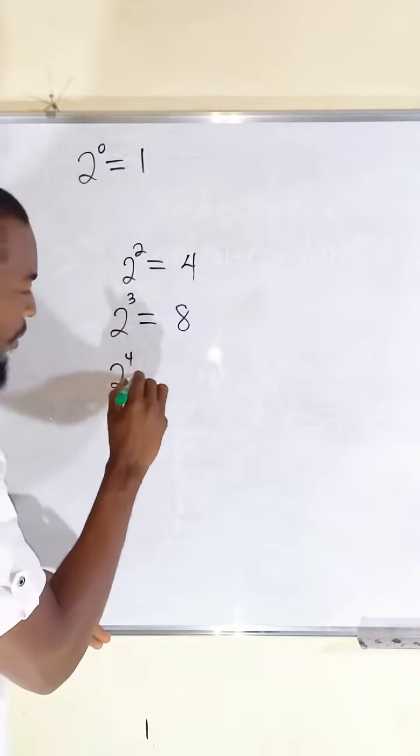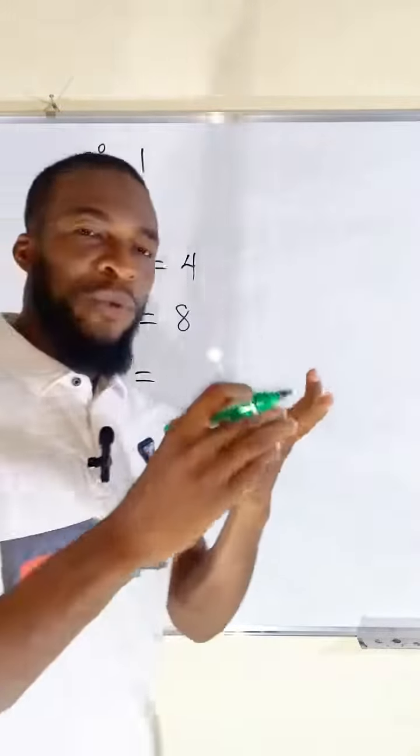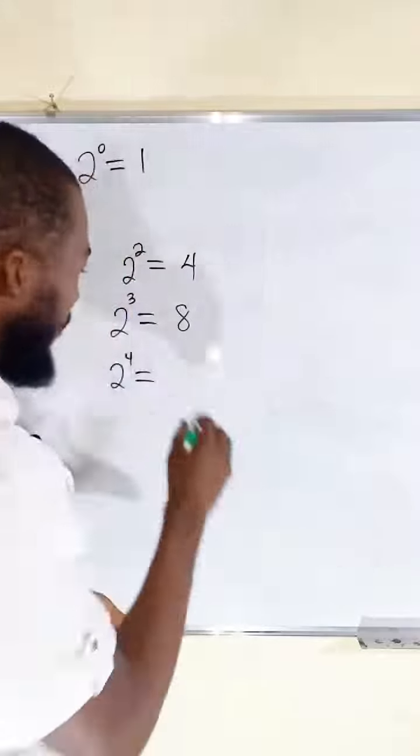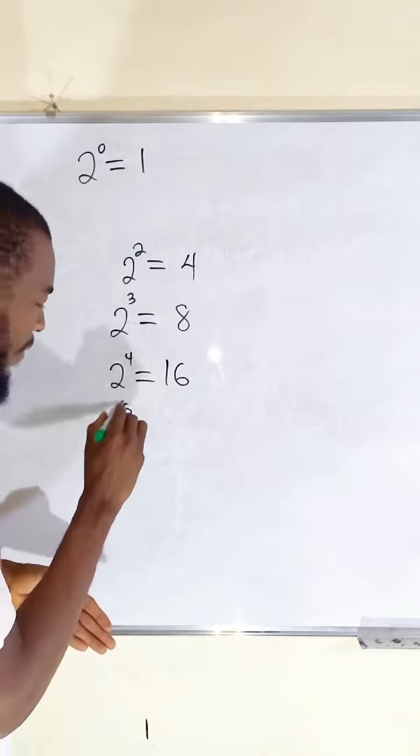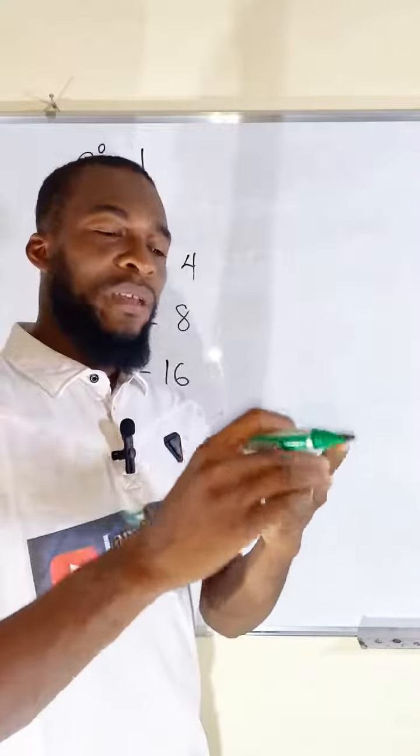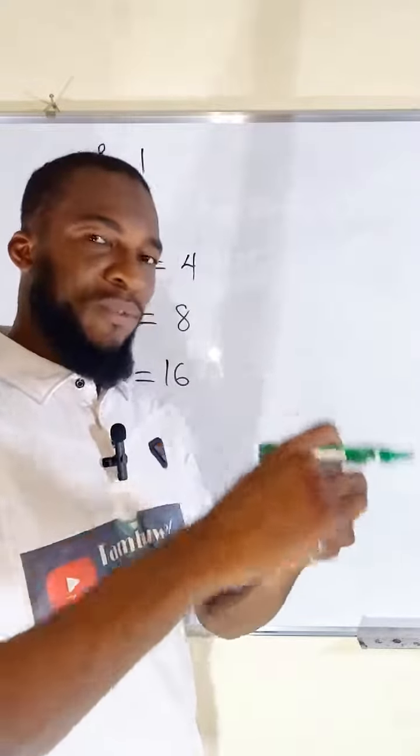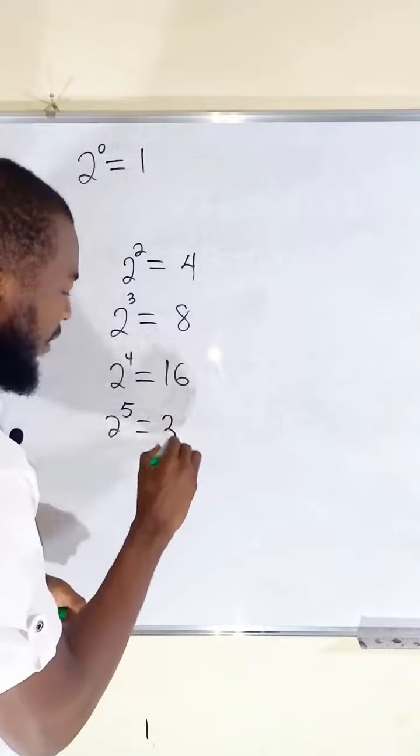2 to the power of 4: 2 times 2, 4 times 2, 8 times 2, equals 16. Let me take the last one, 2 to the power of 5: 2 times 2, 4 times 2, 8 times 2, 16 times 2, equals 32.